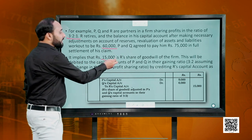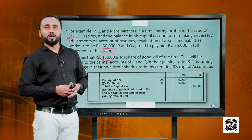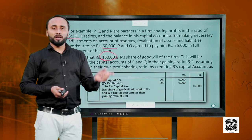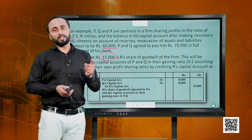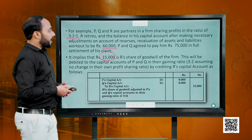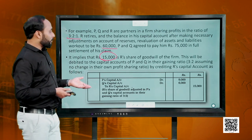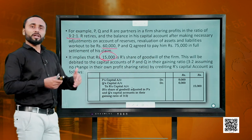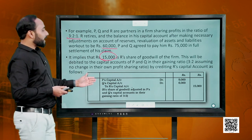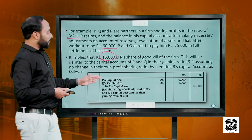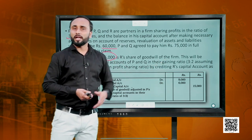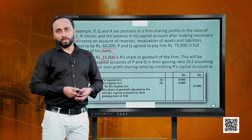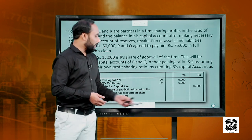This 15,000 which is being paid to the retiring partner will be treated as goodwill. We will credit the retiring partner and debit the gaining partners. Assuming the ratio remains the same — 3:2 was the ratio of the remaining partners, which also becomes the gaining ratio — we debit the gaining partners in ratio 3:2 and credit the retiring partner with the full goodwill amount.